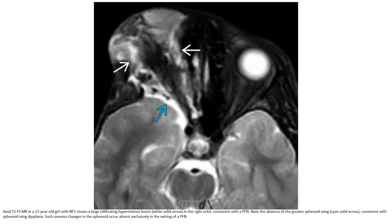This is a T2 fat-saturated image in a 12-year-old with neurofibromatosis type 1, showing a wide infiltrating hyperintense lesion in the right orbit, consistent with plexiform neurofibromatosis. Note the absence of the greater sphenoid wing, consistent with sphenoid wing dysplasia. Such sphenoid changes occur almost exclusively in the setting of plexiform neurofibromatosis.